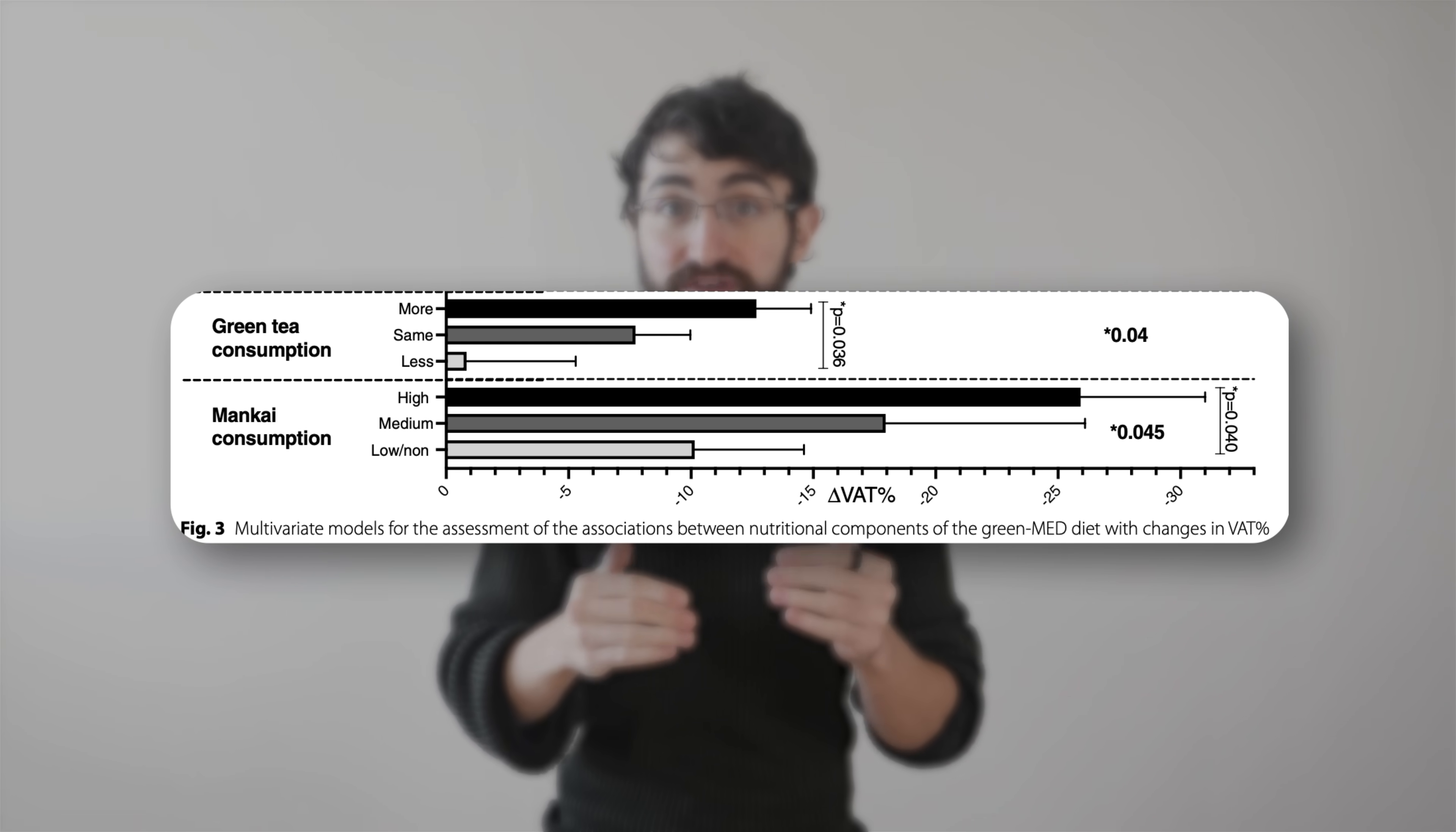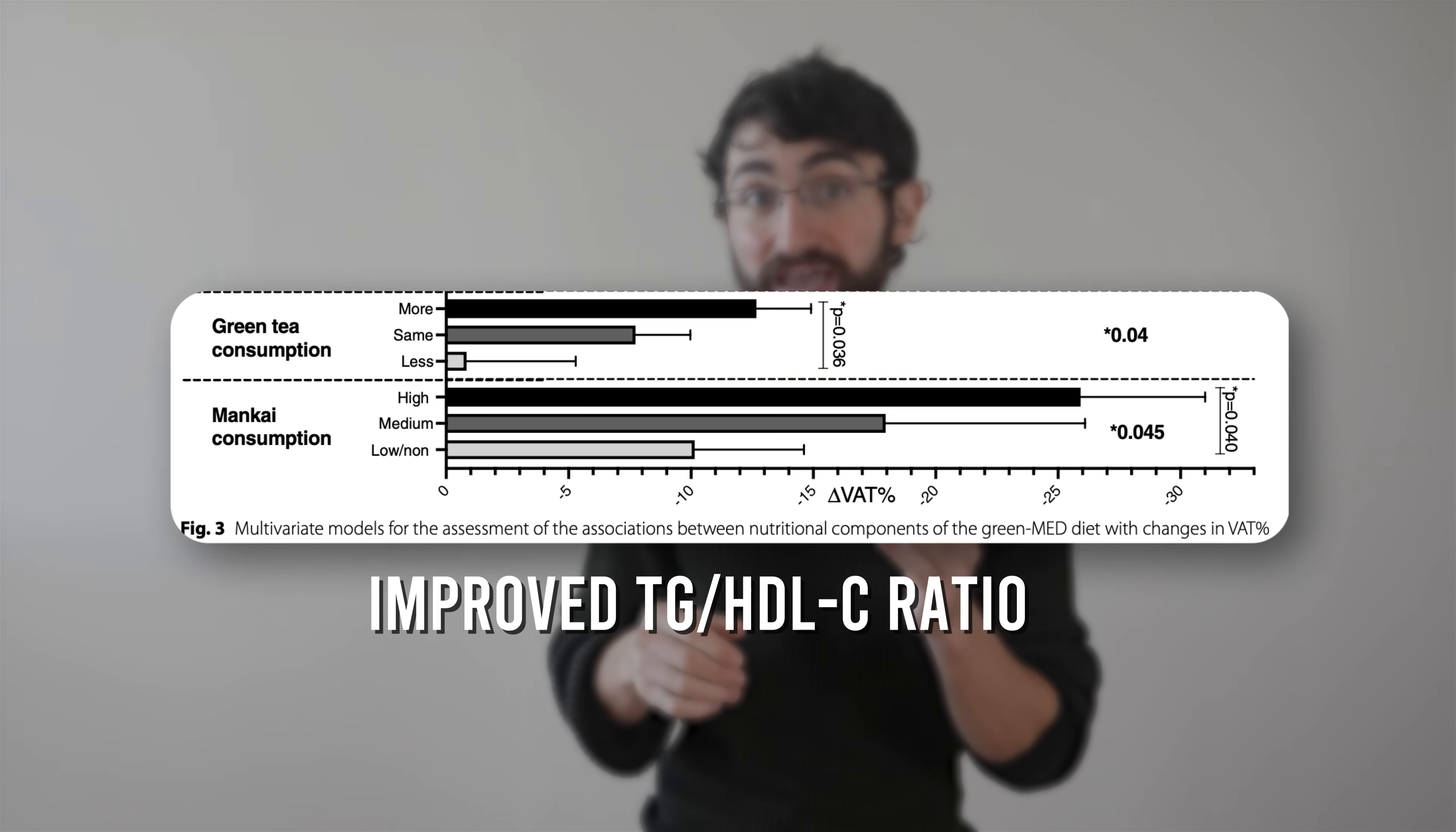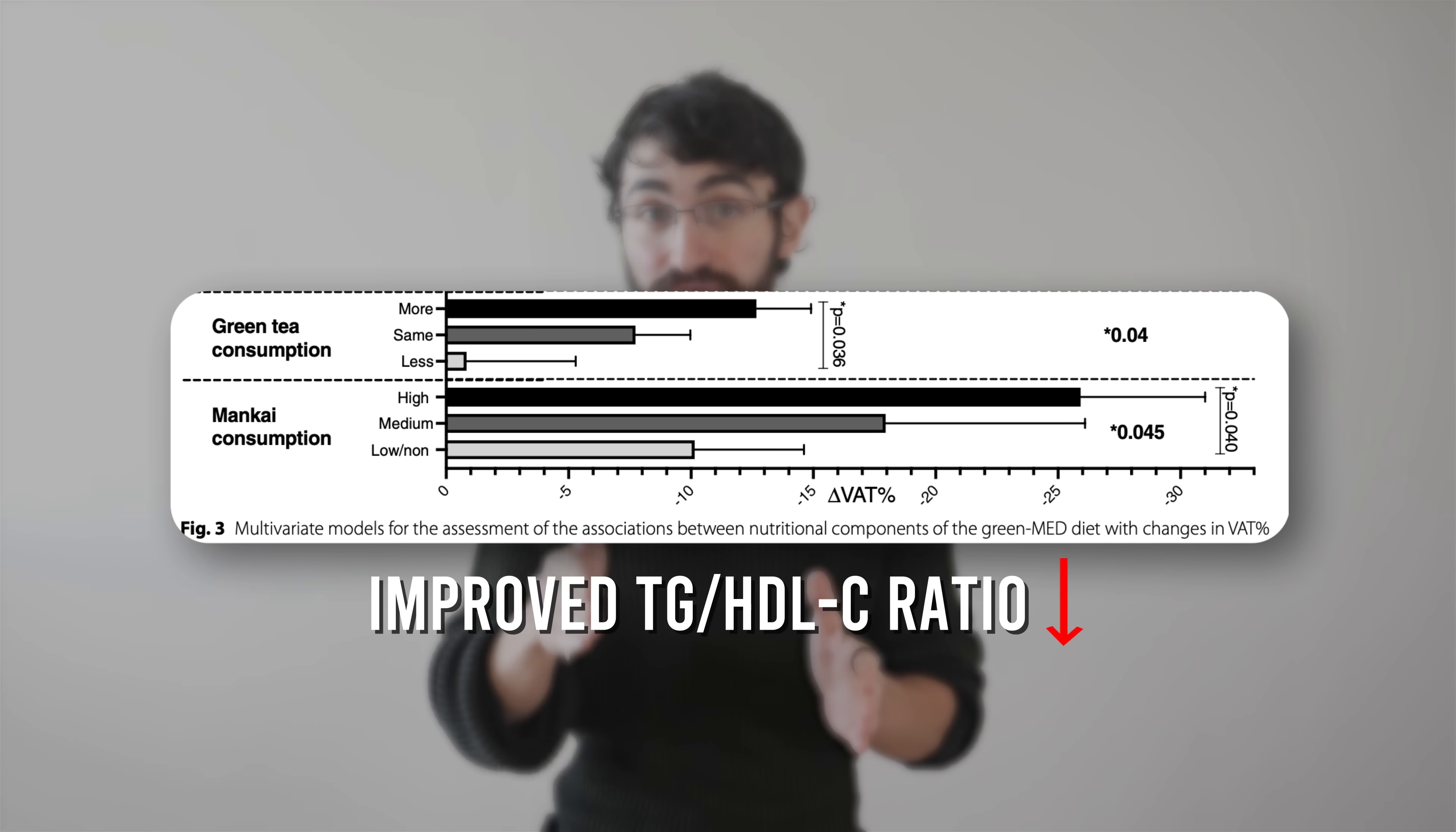To explain the results, the main differentiator of this green med diet was the green tea and the Wolfia globosa duckweed, or Mankai. What's more, even within the green med diet group, consumption of different amounts of the Wolfia globosa had impressive associations in a multivariate regression model with visceral fat reduction, as well as with improved triglyceride to HDL ratio, which is itself a marker of metabolic health that's linked to lower visceral fat levels.